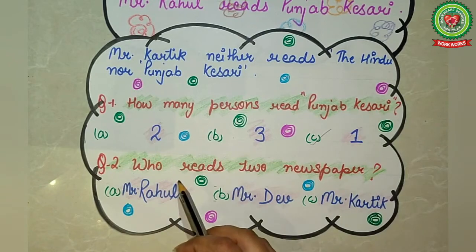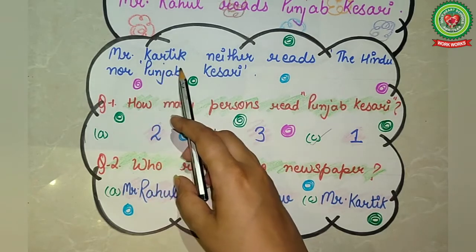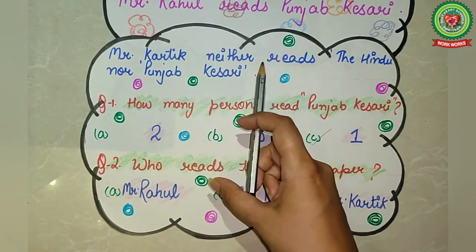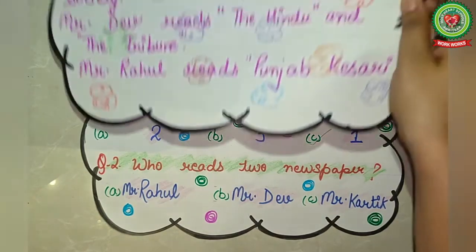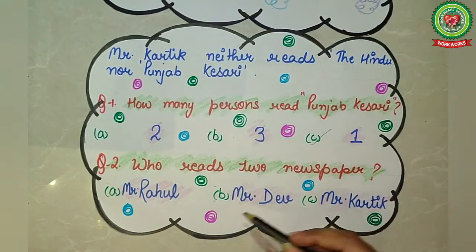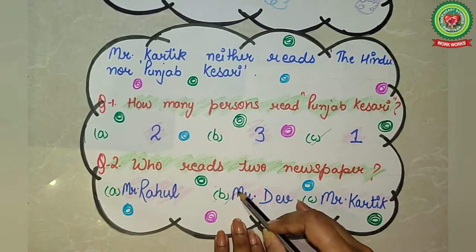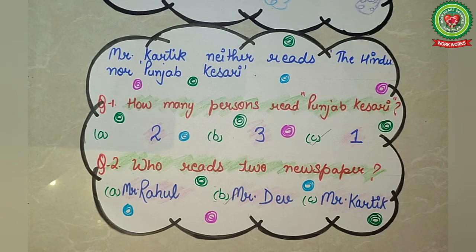Next question: who reads two newspapers? Mr. Kartik reads only one paper, so two papers are read only by Mr. Dev. The answer is option B, Mr. Dev. Students, I hope you have all understood today's topic. Now you can try all the related questions given to you in the Snap homework. Thank you.